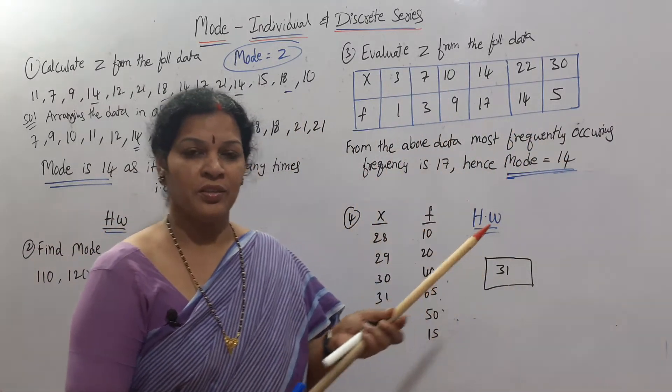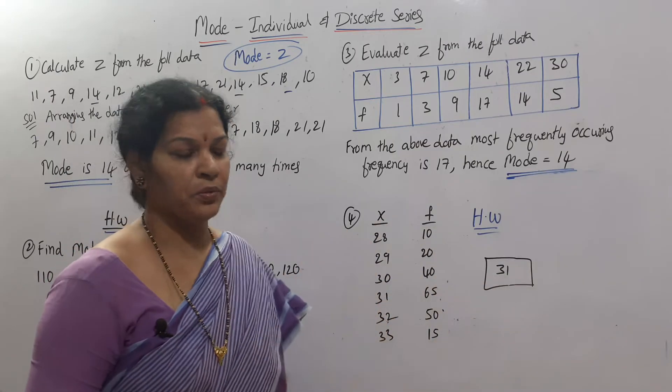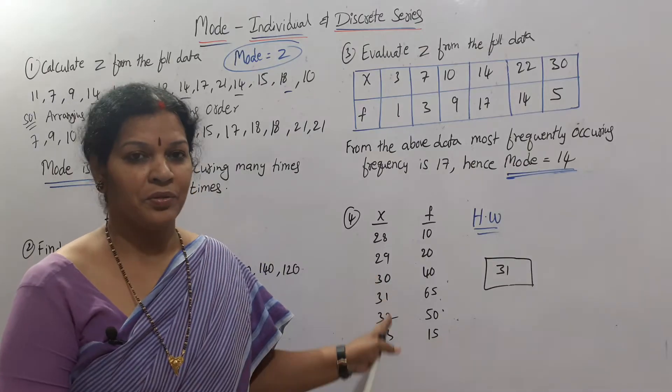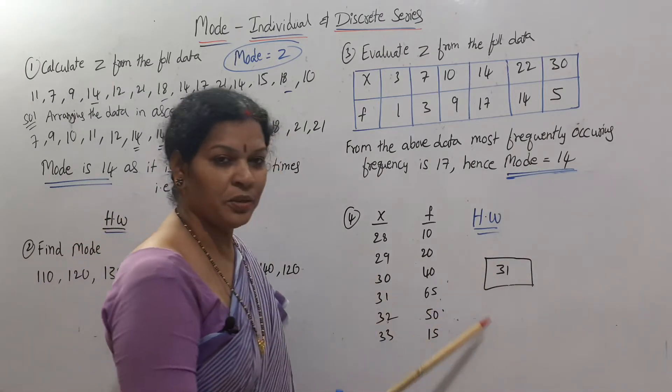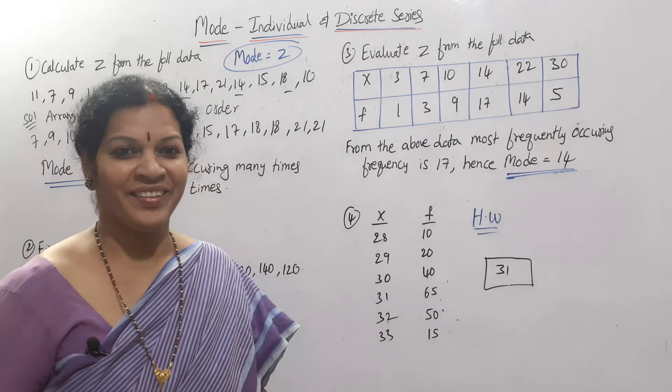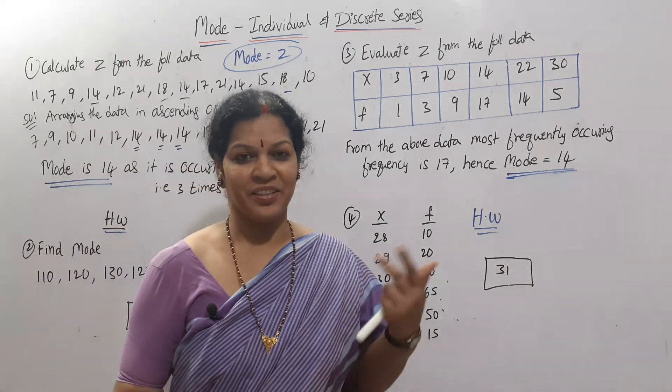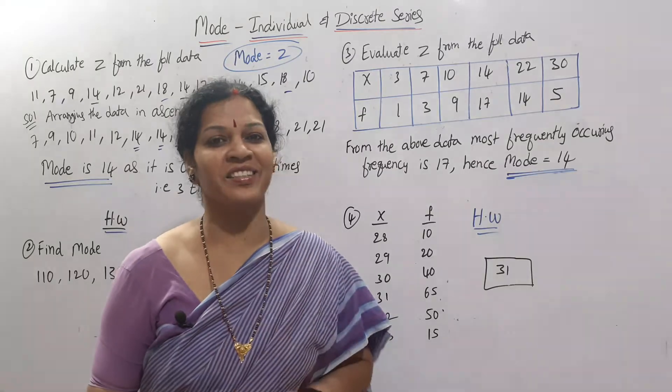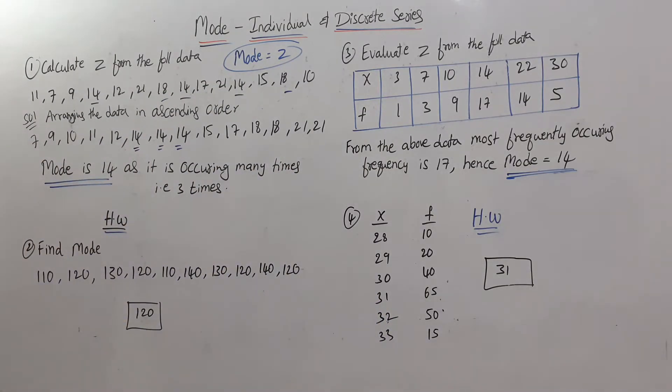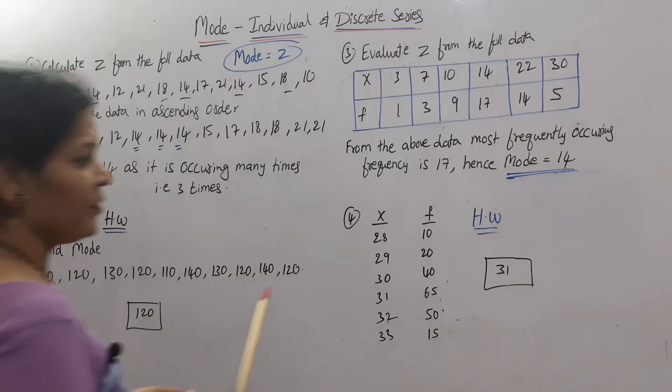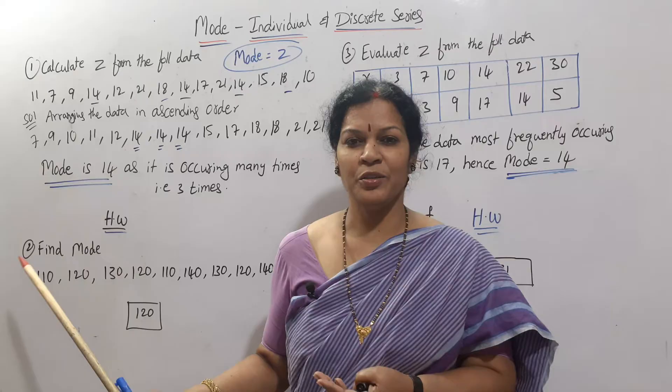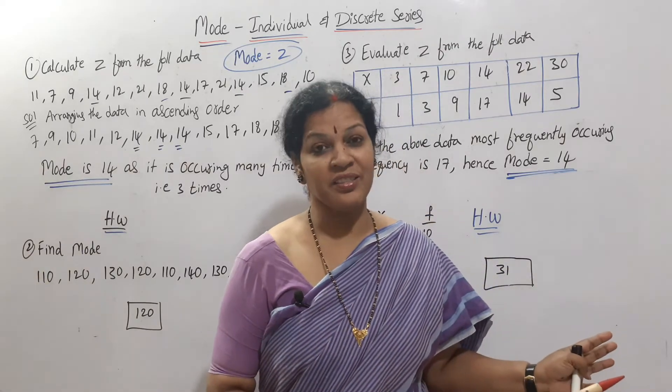If you understand this, here is homework for you. X values are given, frequency is given - find the most frequently occurring number. The answer is 31. But don't be so happy - let's wait. I'll tell you another twist in discrete series. First take a screenshot.